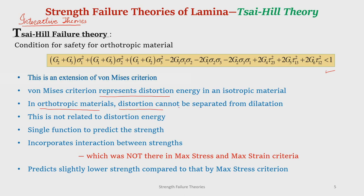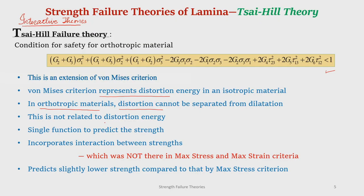In the von Mises criterion, for any state of stress we split the stress and corresponding strains into hydrostatic and deviatoric parts. The hydrostatic part is responsible for volume change and the deviatoric part for distortion; the energy corresponding to distortion is the distortion energy. However, in orthotropic materials distortion cannot be separated from dilatation as in isotropic materials, because there is a possible shear-extension coupling. Therefore it is not possible to separate the distortion energy from the dilatation energy, and in a true sense the Tsai-Hill criterion is not a distortion energy theory even though it is adopted in the same line.